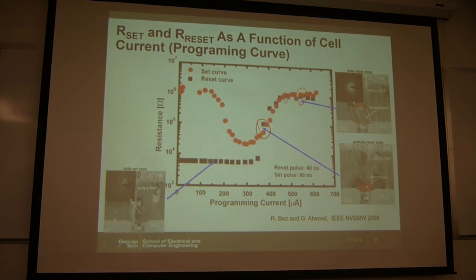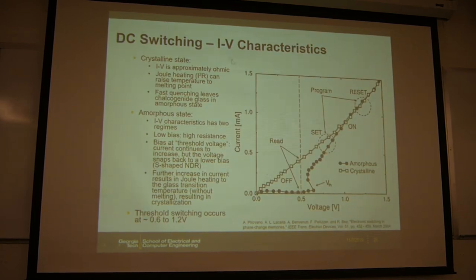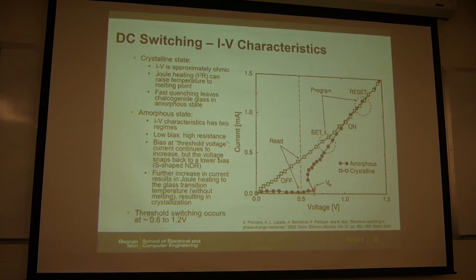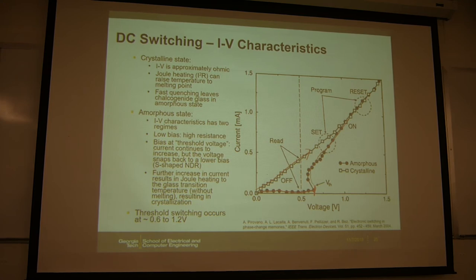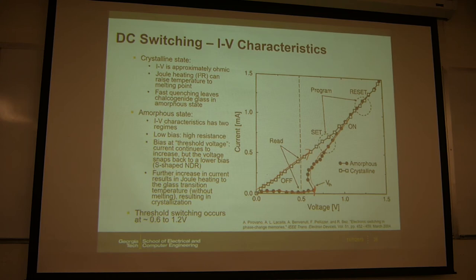The DC sweep IV characteristics show current versus voltage. You can sweep the current, measure voltage, and at a certain point the set will happen. After the set, sweeping again gives the IV curve at the low resistance state. However, in DC sweep you can only do the set, not the reset — because reset requires a fast quench, meaning you must remove the voltage very quickly, which DC sweep is too slow to do.